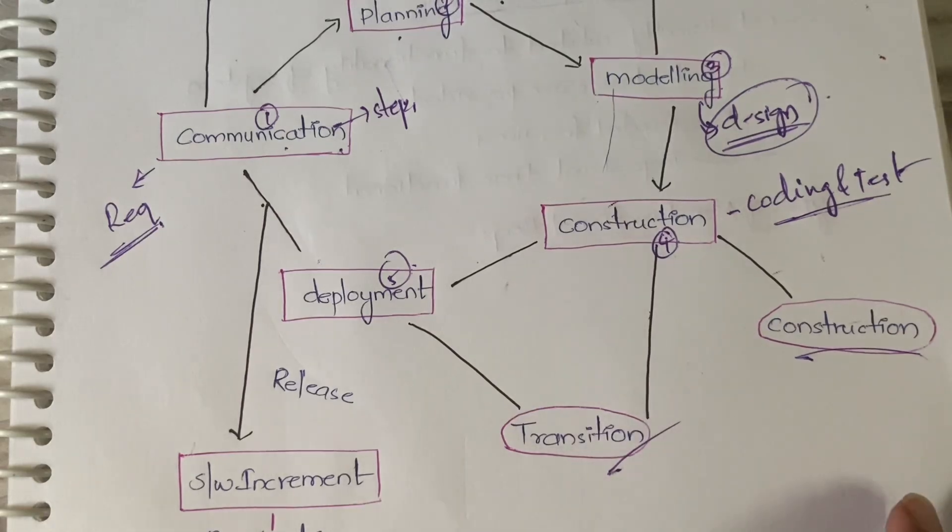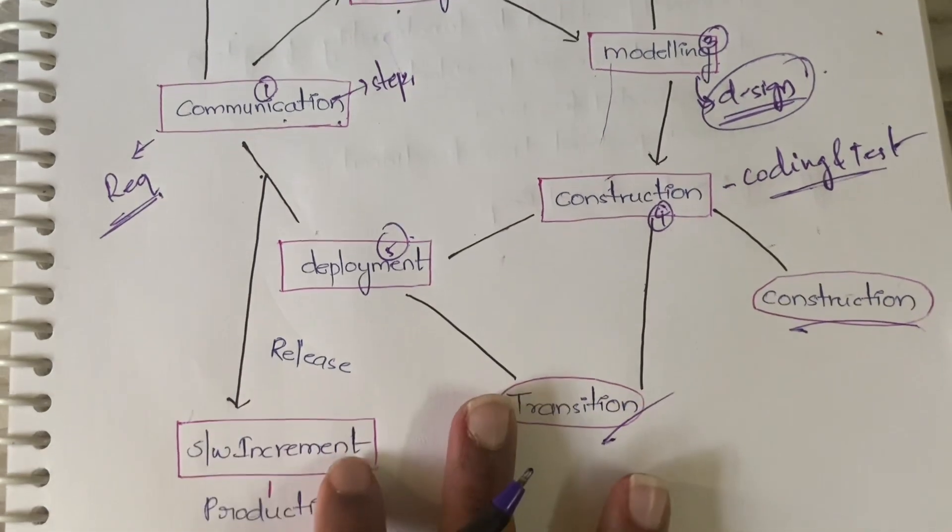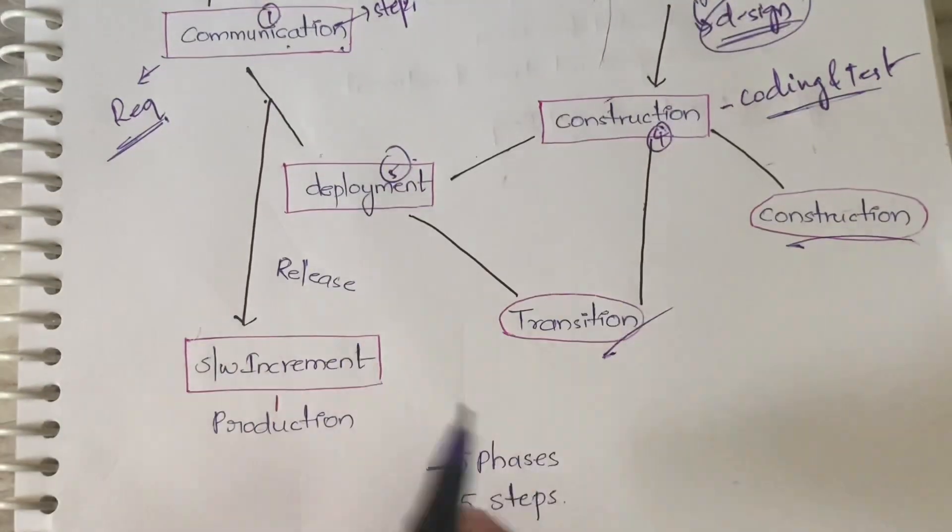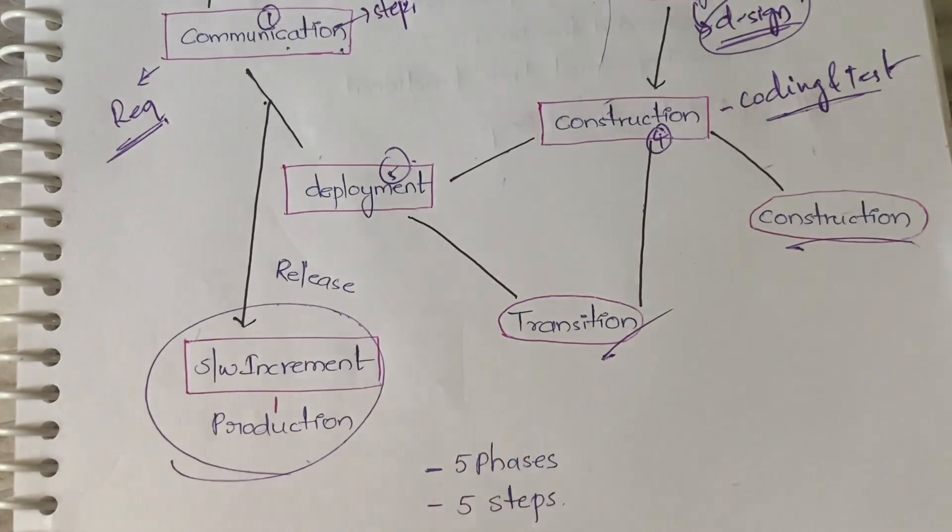Next deployment. Now we have some extra thing - software increment and production. Software increment and production is nothing but you are giving it to production, you are giving it to the customer. The customer is satisfied, then you will be producing more units, and if the customer is giving any suggestions you will be doing it in increments.